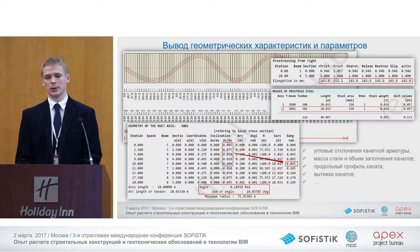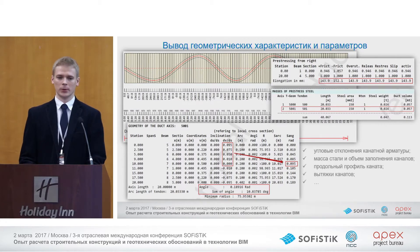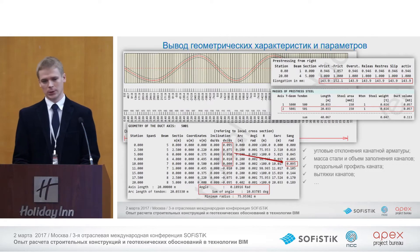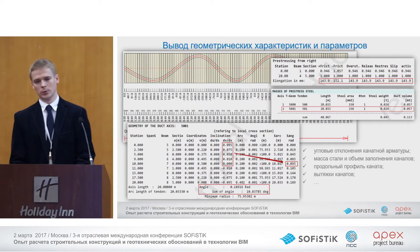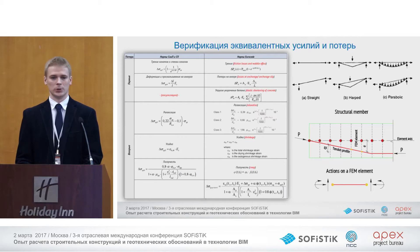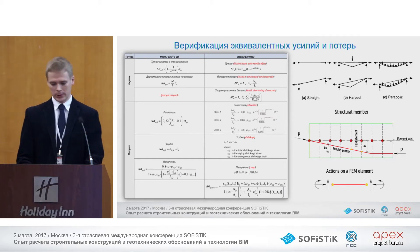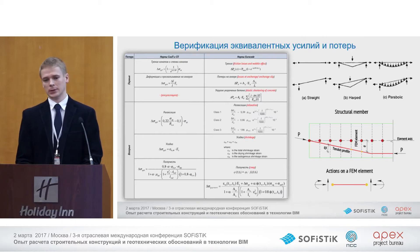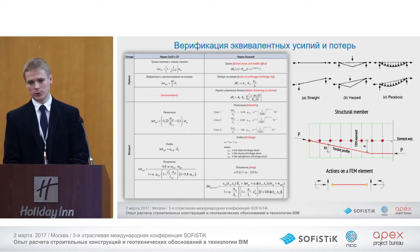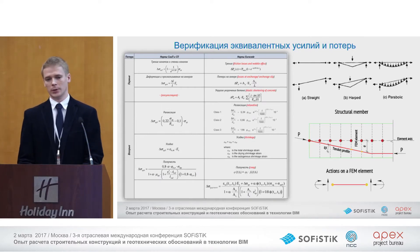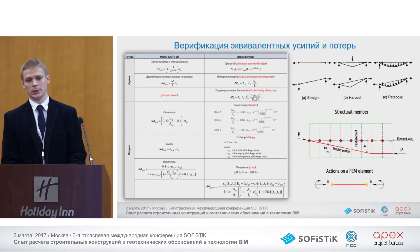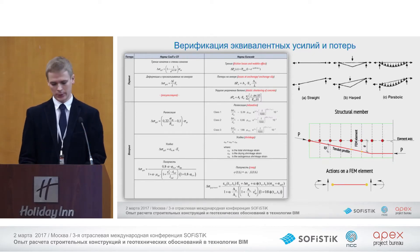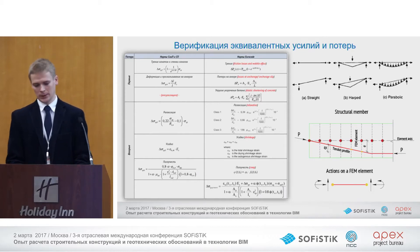Each user in SOFISTIK can manage and adjust the output sections and representation of data, including elongation, volumes, and everything useful. Here is the graph of loss and tensioning, and verification of forces and losses. We compared to manual calculations, and the difference between manual calculations and SOFISTIK calculations is less than 1%, so it's very accurate and can be highly trusted.